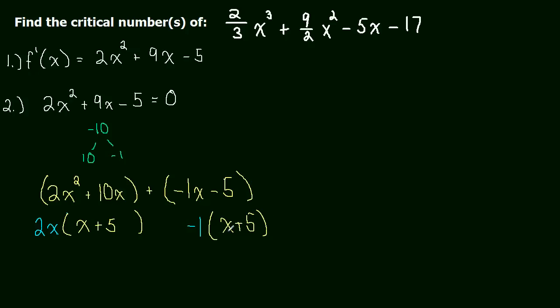And now we have x plus 5 in both terms, so we factor that out. And this is going to become 2x minus 1. That's what's left when we factor out an x plus 5, times by an x plus 5. And this whole thing is equal to 0. So we factored everything completely, and now we set it equal to 0, and that will give us our critical numbers.